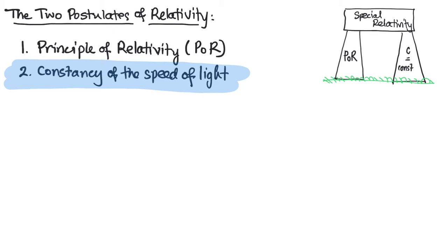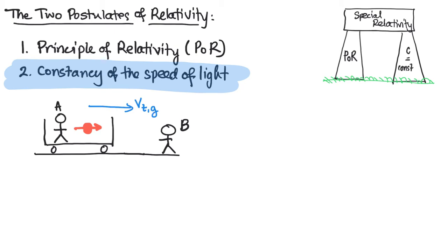Remember with our example of Alice on the train throwing a ball and Bob on the ground measuring the speed of that ball, the speed for the ball that Bob measures is most certainly dependent on the speed of the train. The faster the train is approaching him, the faster he measures the ball to go. But we said if we replace the ball with a photon, no matter how fast that train is going, Bob is always going to measure the photon moving at the speed of light, one foot per nanosecond, even if the train itself was going at 90% of the speed of light.